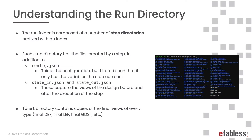The run directory: like OpenLane 1, OpenLane 2 creates a directory for every run. The run directory is composed of a number of step directories, each prefixed with an index — unlike OpenLane 1. Each step directory has all the files created by a specific step: output files, reports, etc. In addition, a config.json file filtered to only the variables relevant to that step, and the state objects which capture the various views of the design before and after executing the step. There's also a directory named final which contains copies of the final views of every type.